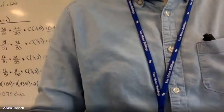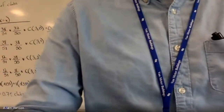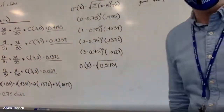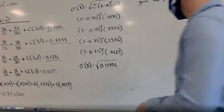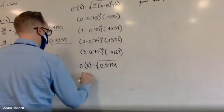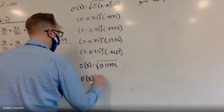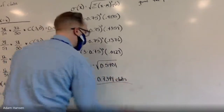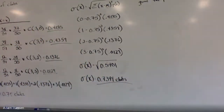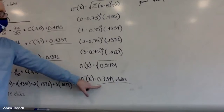Taking the square root of 0.5401, the standard deviation is 0.7349. So we would expect 0.75 of the cards to be clubs, and deviate from that average by about 0.7349 clubs.